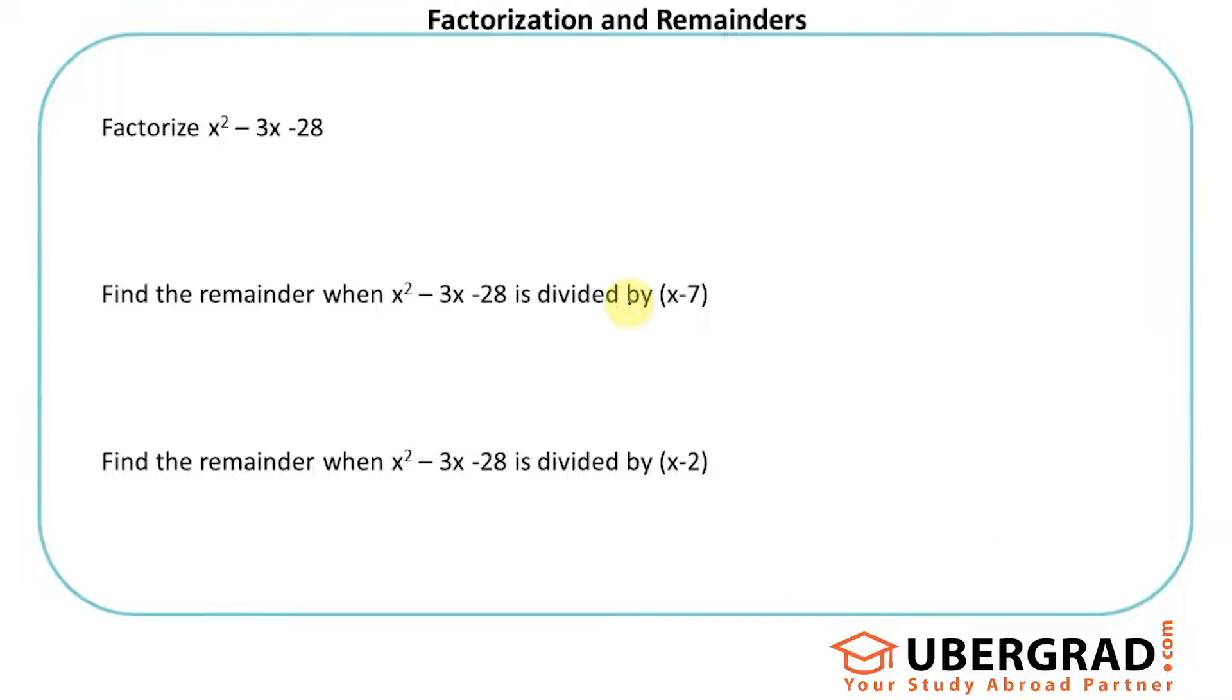Next, sometimes you will get to see a concept called factorization. If I'm talking about this factor x² - 3x - 28, factorization is like this: in numbers, if I'm asking to write factors of 24, it's like writing 8 × 3 or 12 × 2 - basically writing as a product of multiple numbers.